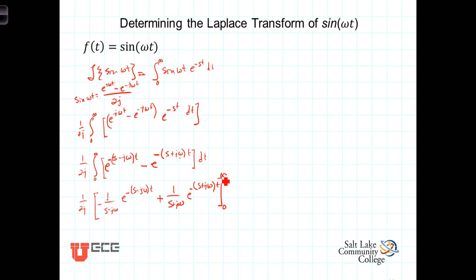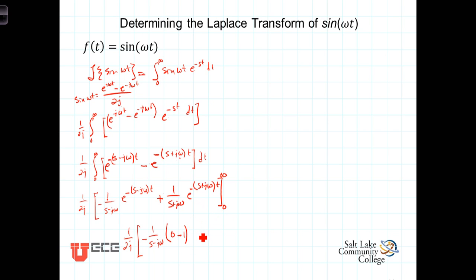Looking at the upper limit, we have e to the minus infinity, which is just 0. So carrying things down, we have 1 over 2j times: negative 1 over s minus j omega times 0, minus that term evaluated at the lower limit of 0, which gives 1. Then on the second term, e to the minus infinity is again 0, and e to the 0 is 1, giving us plus 1 over s plus j omega.